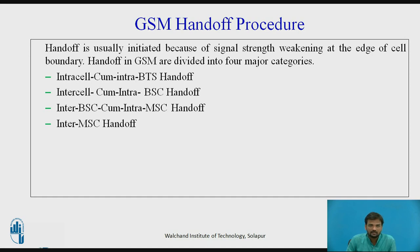The next category is inter-cell or intra-BSC (intra-Base Station Controller) handoff. In this type of handoff, the radio channel changes between two cells served by the same BSC. Initially, the handoff request is initiated by the serving base station to the BSC. The MSC transmits the handoff request to the destination base station. After receiving acknowledgement, the MSC gives the handoff command. The mobile subscriber then transmits a handoff complete message to the base station, which relays it to the MSC for releasing the earlier occupied channel.